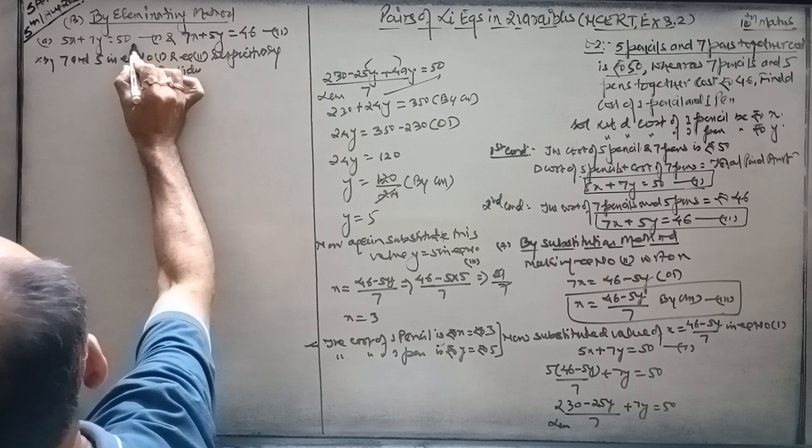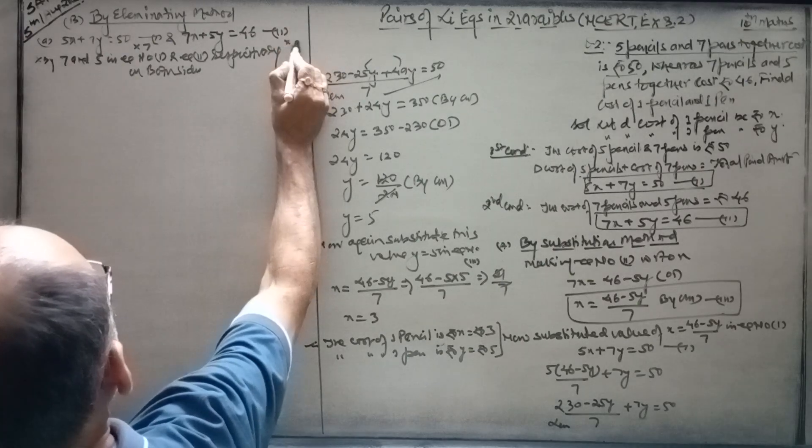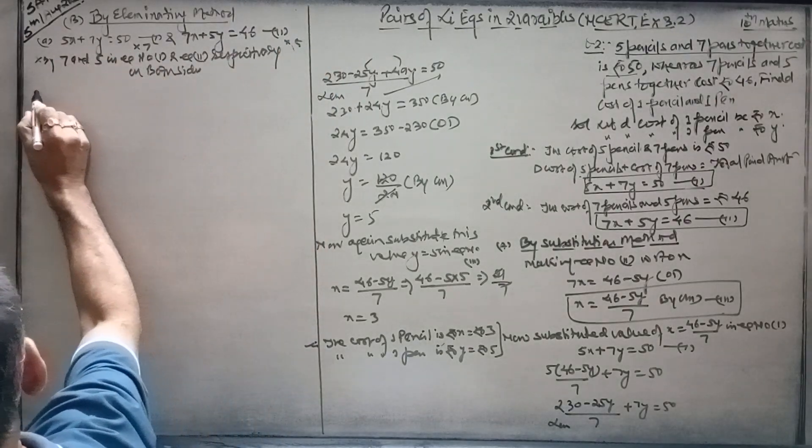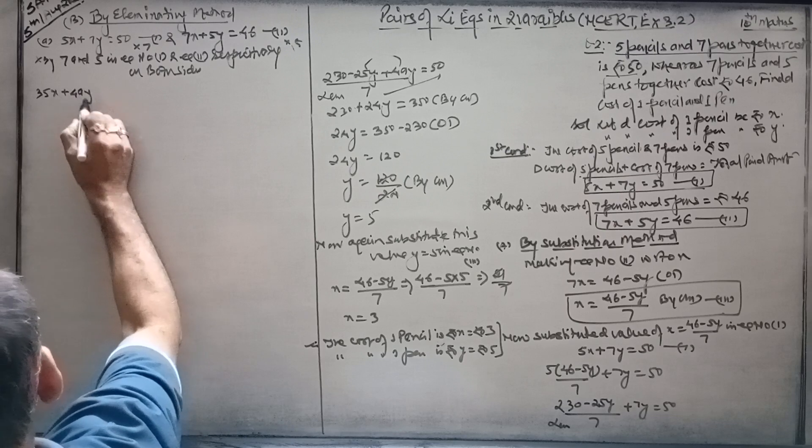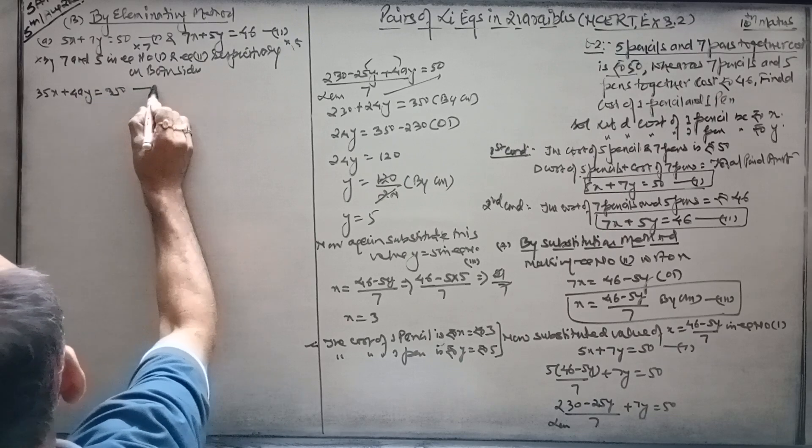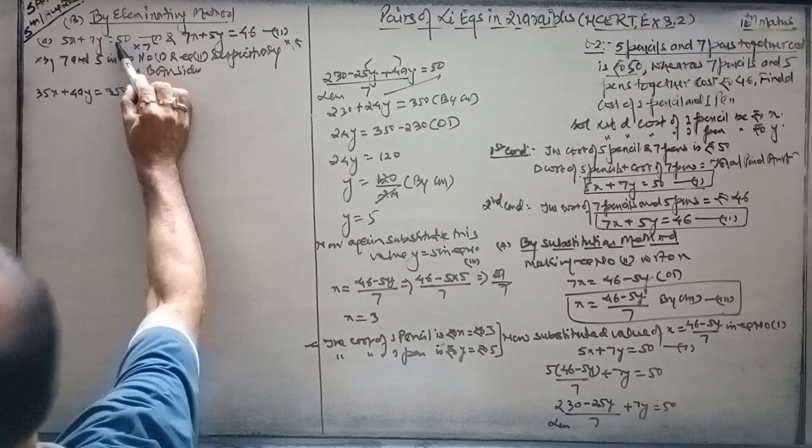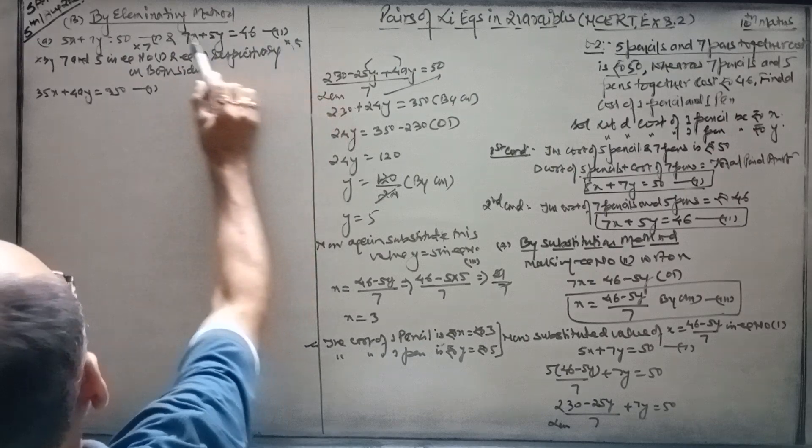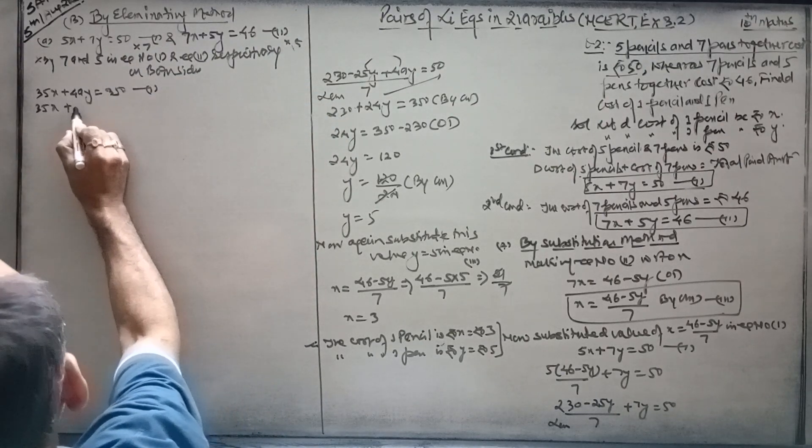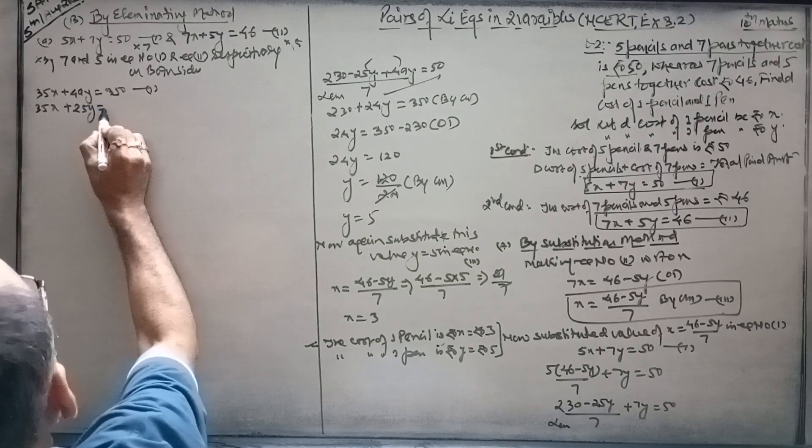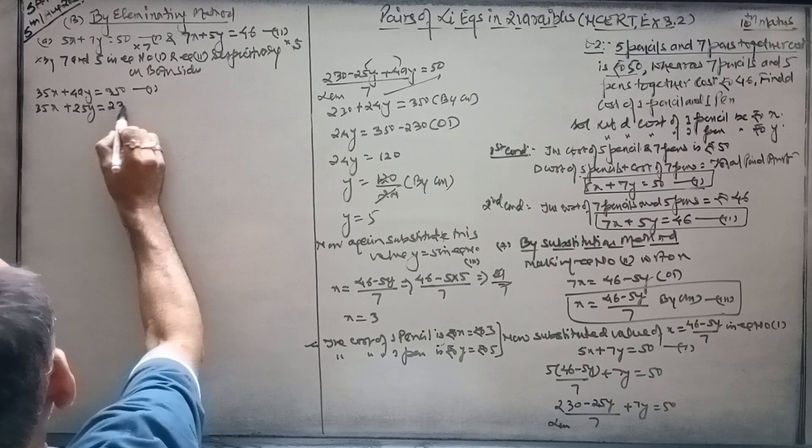You will have to make the coefficient 7. So 7x plus 49y equals 105. 35x plus 25y equals 230. Am I right? Very good.